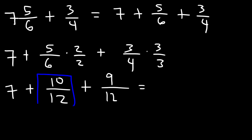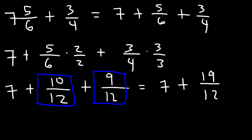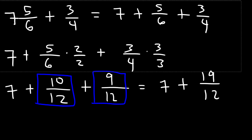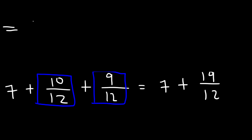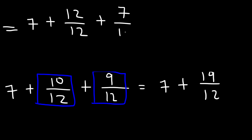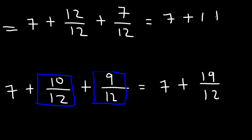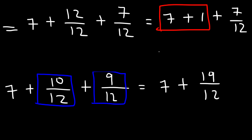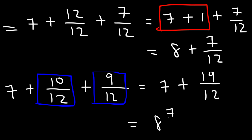So now we can add these two fractions. 10 plus 9 is 19, so we have 19 over 12. I'm going to write that as 12 over 12 and 19 minus 12 is 7, so the missing fraction is 7 over 12. 12 divided by 12 is 1, so I'm going to have 7 plus 1 plus 7 over 12. 7 plus 1 is 8, so this is 8 plus 7 over 12, which gives a final answer of 8 and 7 twelfths. And that's it for this video.